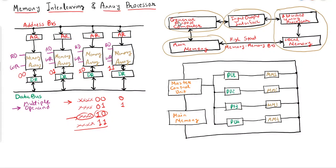If you are having array computation, that data will be transferred into local memory via main memory, and then the attached array processor will perform the computation. Once the operation is over, whatever result is there will be written back to the main memory and can then be used by the general purpose computer.